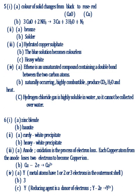Part 3: A Hydrated copper sulfate, B The blue solution becomes colorless, C Heavy white. Part 4: A Ethene is an unsaturated compound containing a double bond between the two carbon atoms. B Naturally occurring, highly combustible, produce carbon dioxide, water and heat. C Hydrogen chloride gas is highly soluble in water, so it cannot be collected over water.